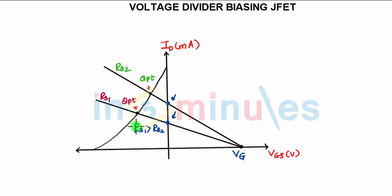Increasing values of RS results in lower coefficient values of ID and more negative values of corresponding VGSQ. This will be your VGSQ, this will be your IDQ. For this point, VGSQ2 has a more negative value as compared to VGSQ1.